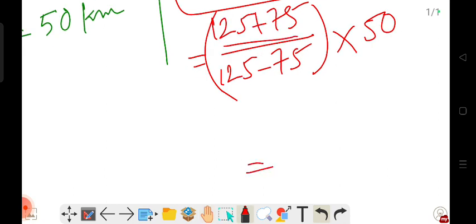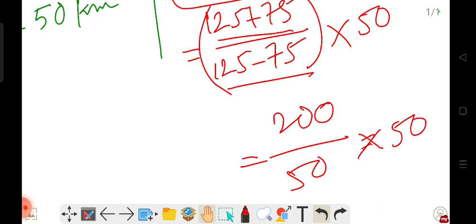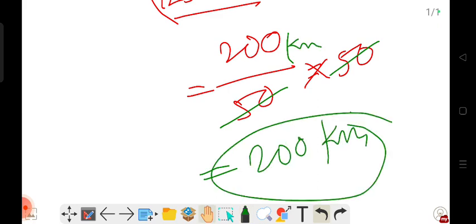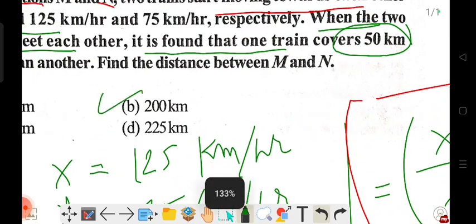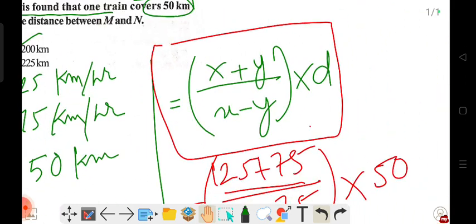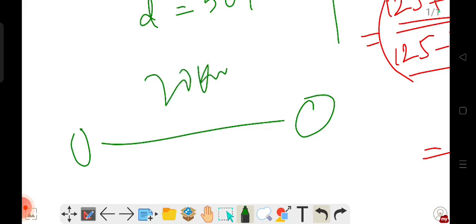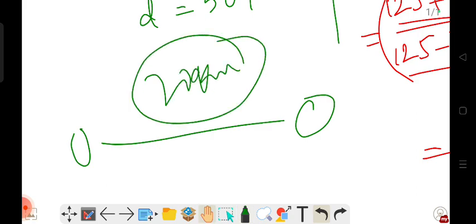So 125 + 75 = 200, divided by 50, times 50. The 50s cancel out, giving us 200 kilometers. So option B is the answer. The total distance between the original starting points of the two trains is 200 kilometers.